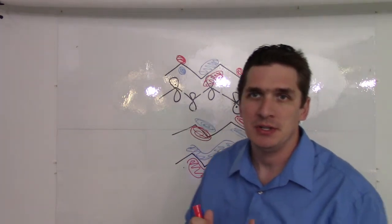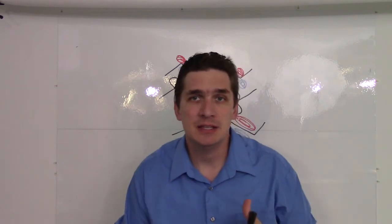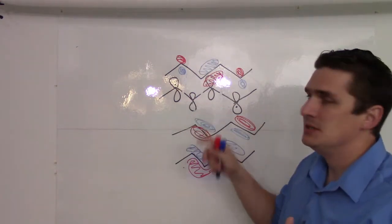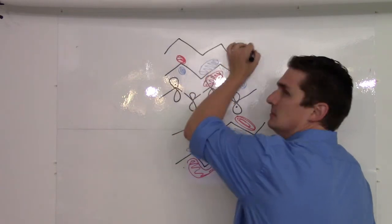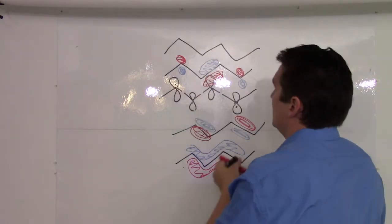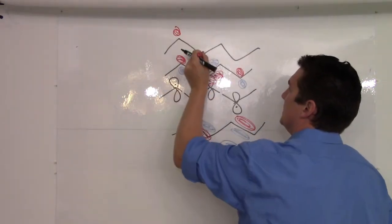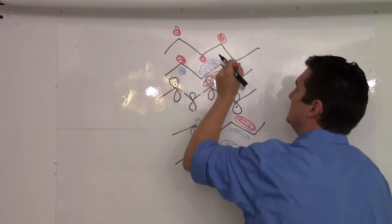Now, our highest energy one is going to be the one that looks f-type. And in this f-type, all three of these are out of phase. So if we draw it, we've got up, down, up, down.